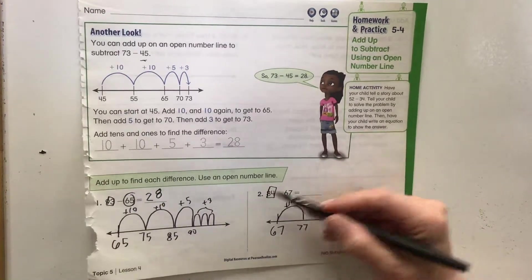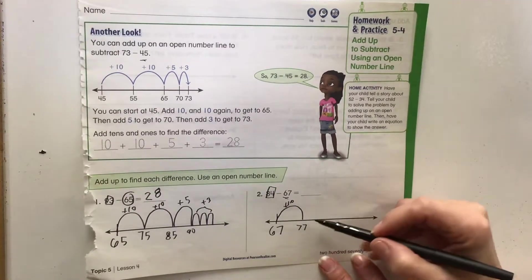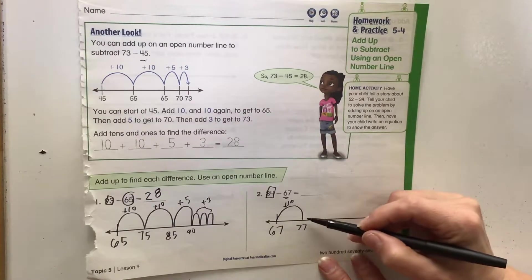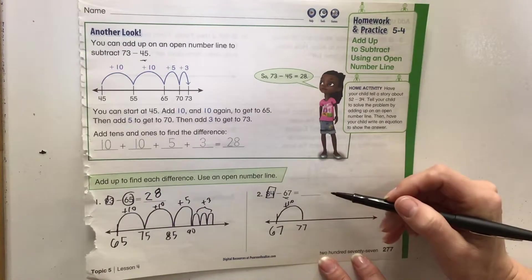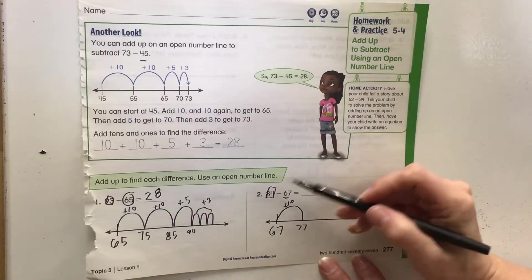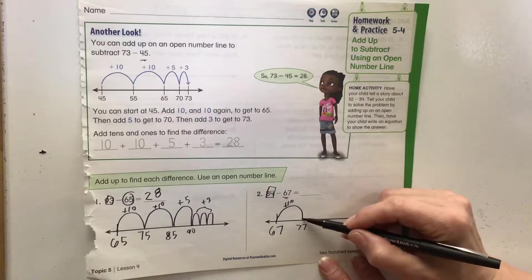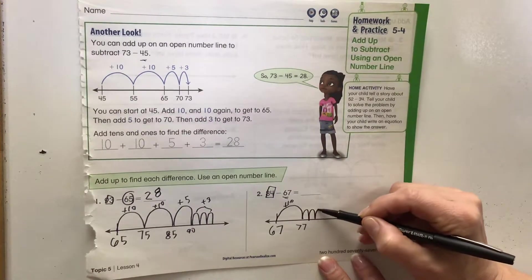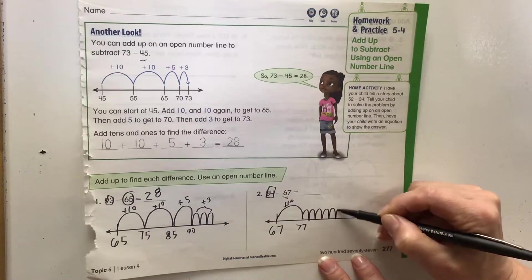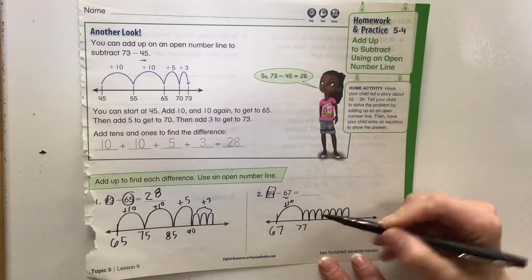So let's see, 77, we could do by ones or we could do by fives. Let's see: 77, 78, 79, 80, 81, 82, 83, 84. We can count by ones.